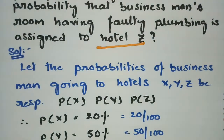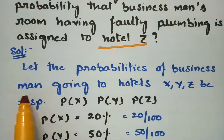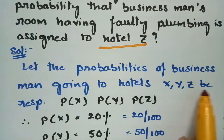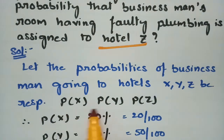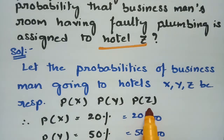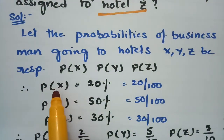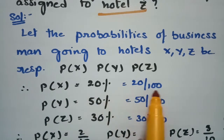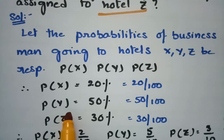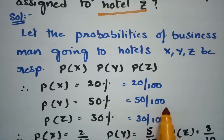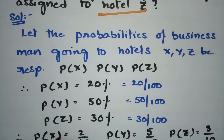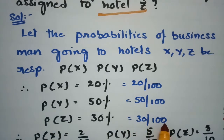Coming to the solution, let the probabilities of the businessman going to hotels X, Y, Z be probability of X, probability of Y, and probability of Z respectively. The probability of the businessman spending time in hotel X is 20 percent, that is 20 by 100. In hotel Y it is 50 percent, that is 50 by 100, and hotel Z is 30 percent, that is 30 by 100.